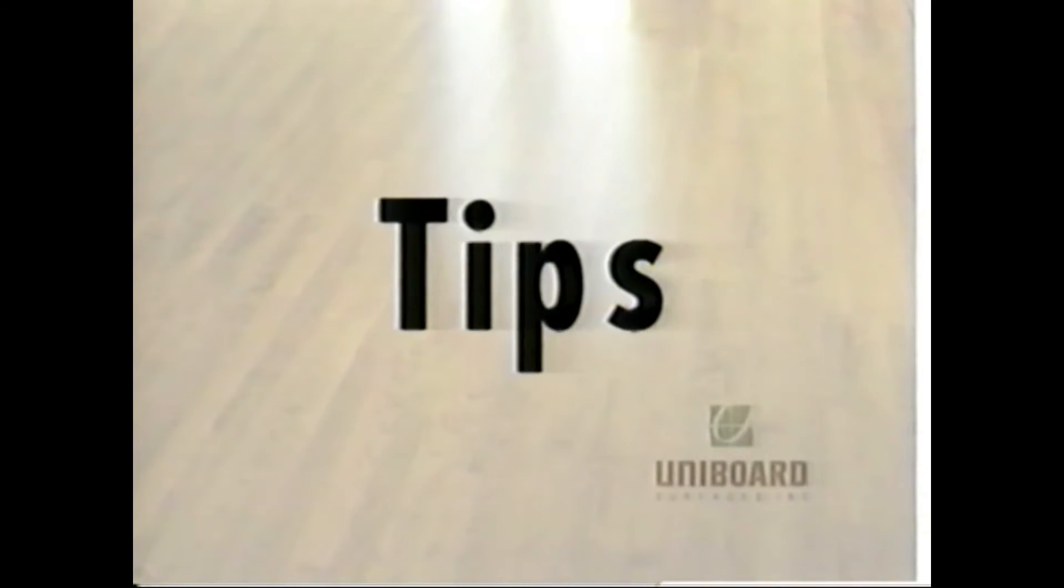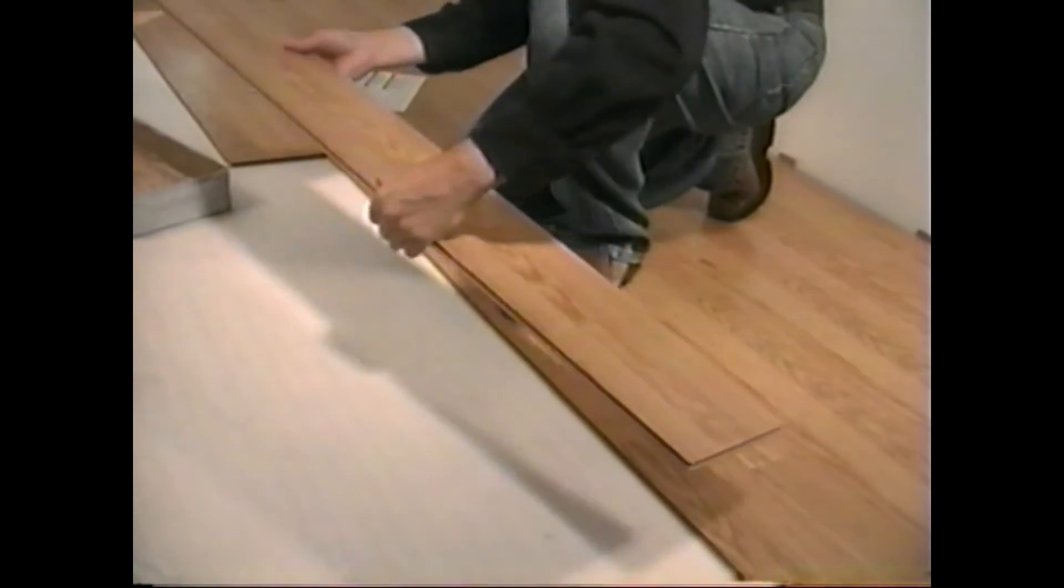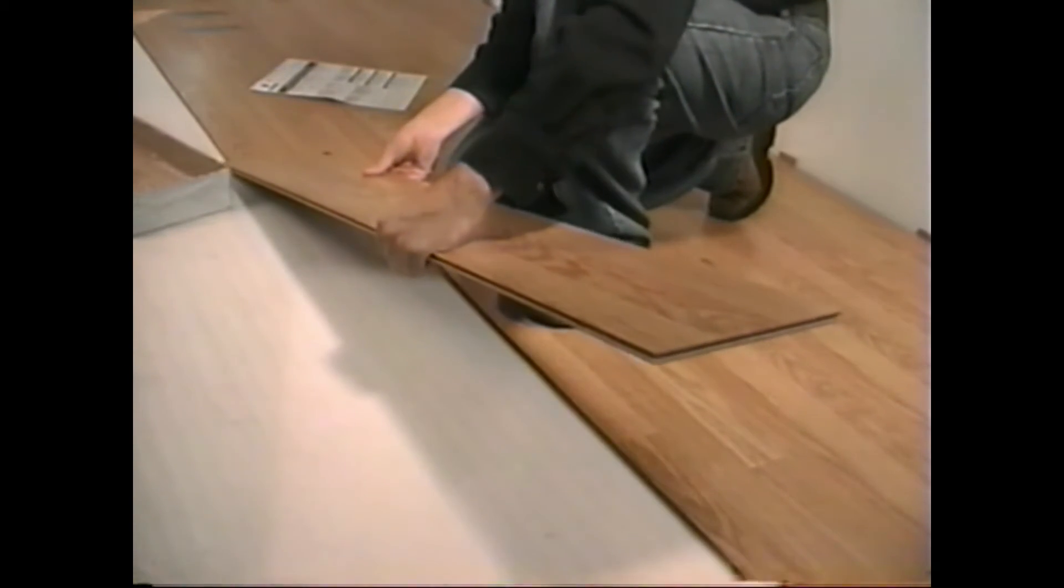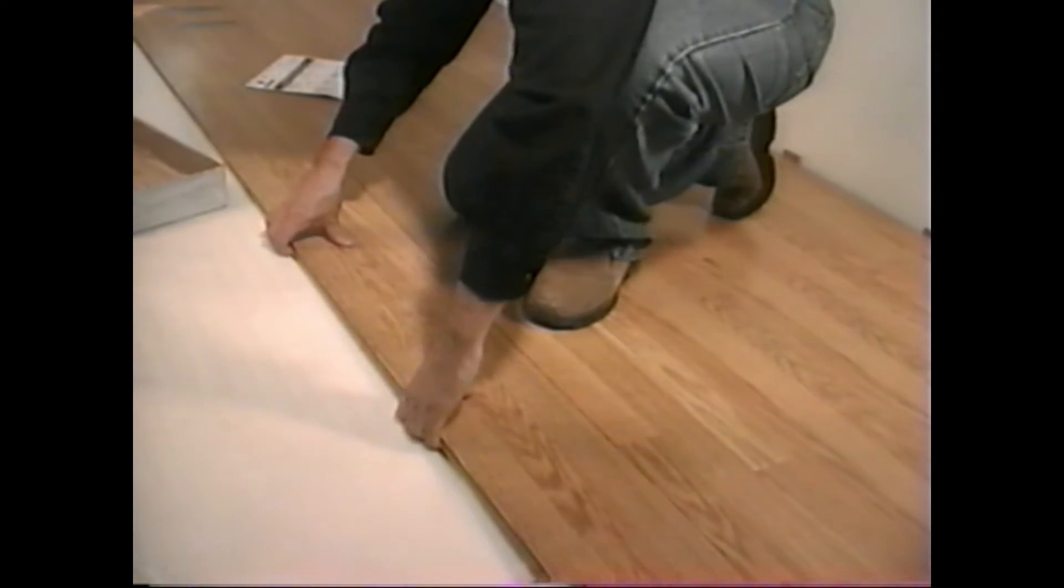The following are important tips to remember when installing Uniboard laminate flooring. After you have installed three or four rows, it is easier to install the remainder of the laminate flooring by working your way back from the wall.